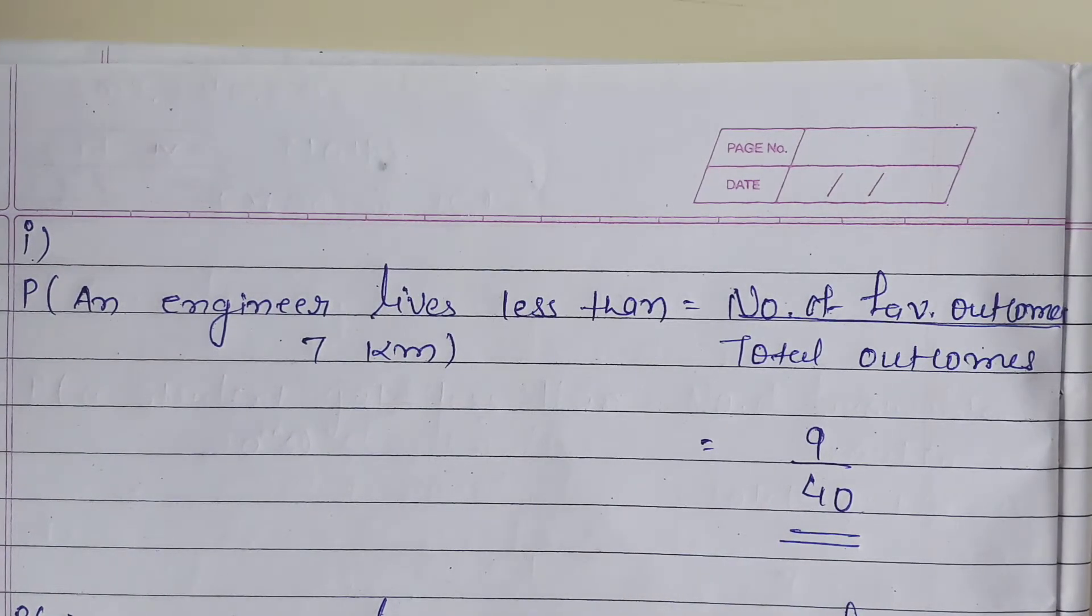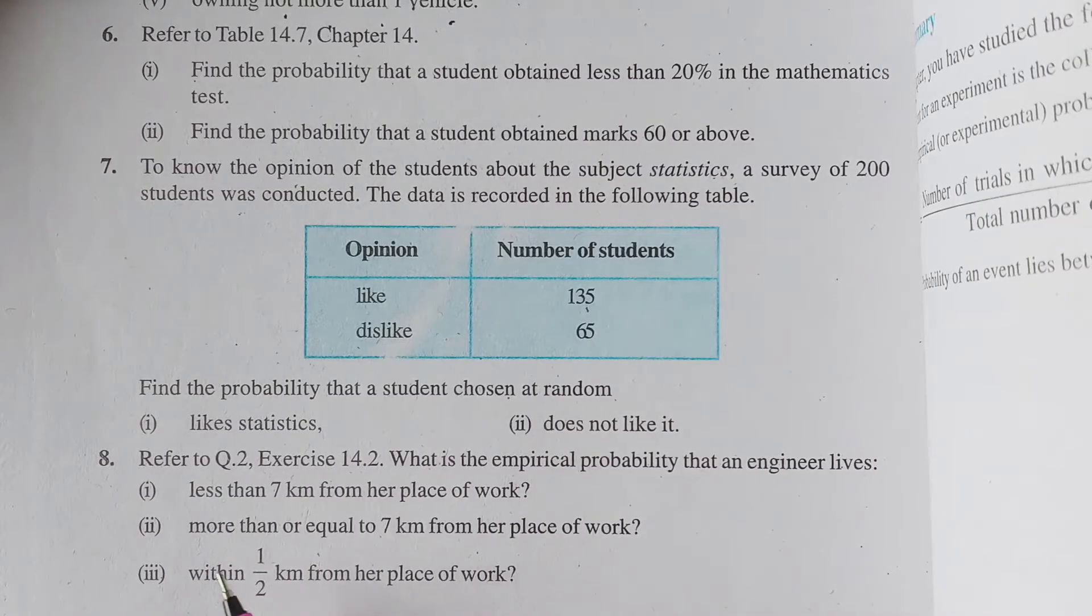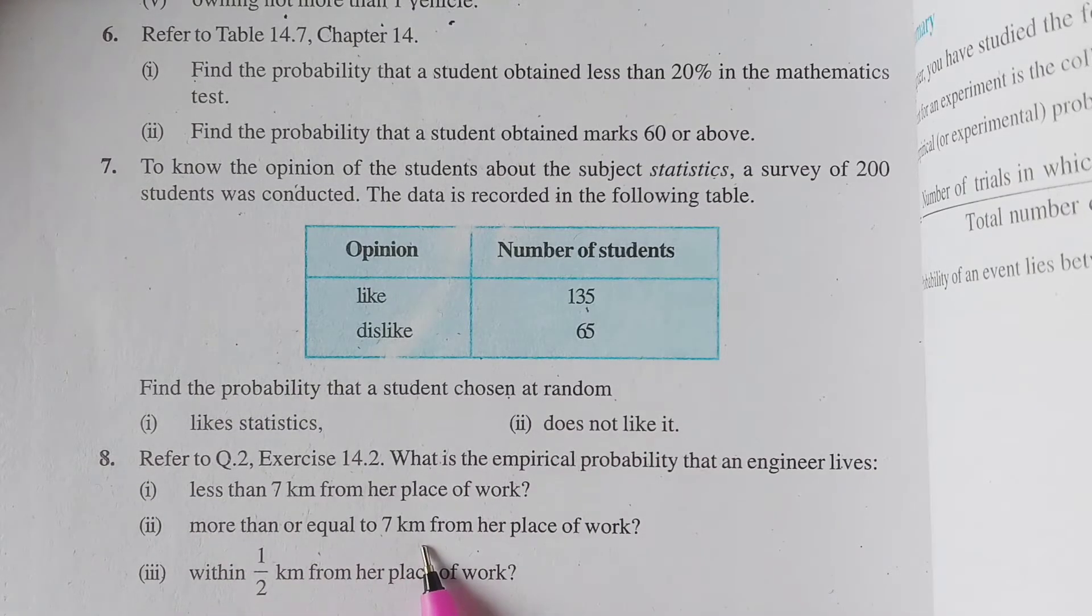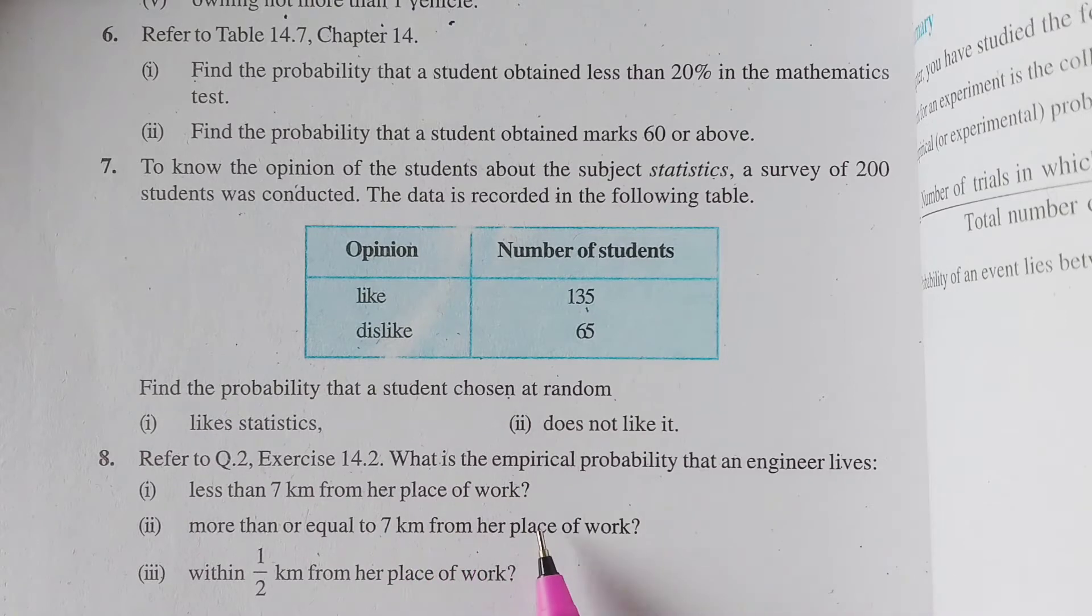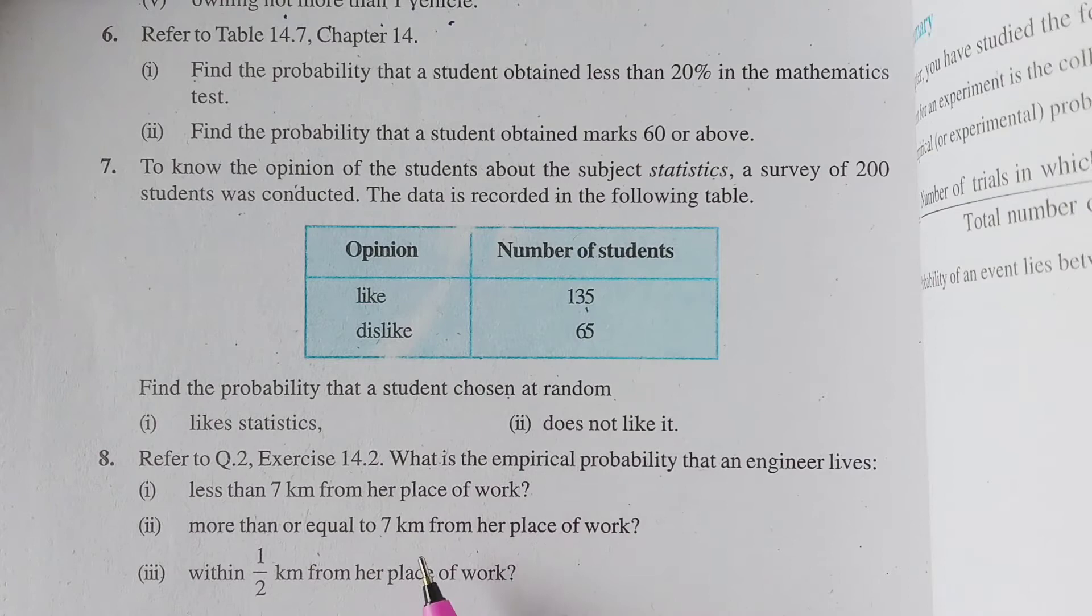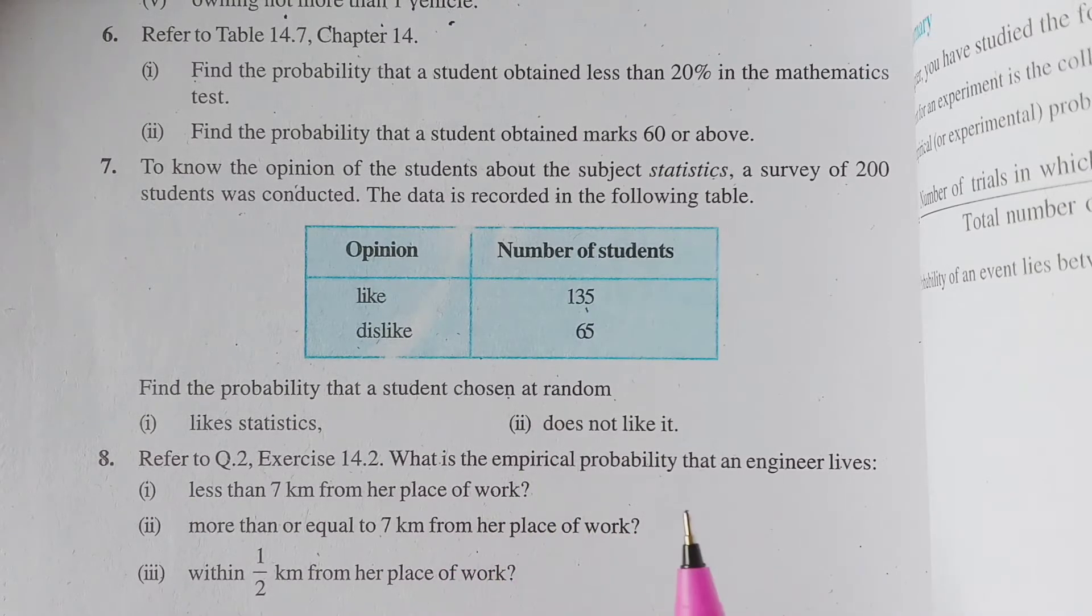Now let's see the second probability. The second probability is more than or equal to 7 km from her place of work. Yani ki 7 or 7 se zyada, wiese engineers kitnay hai. Abhi jo yahan pe first me humne kiya, woh less than 7 se tha. Abhi yahan pe 7 or 7 se zyada, that means ki 40 jo hai, us me se humme iska jo answer hai, us ko minus kar denge.